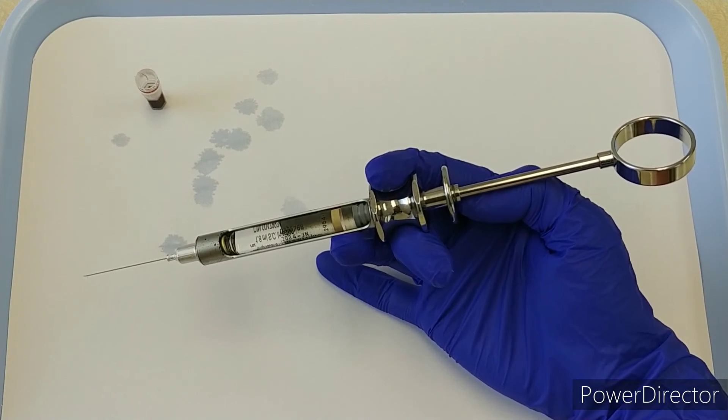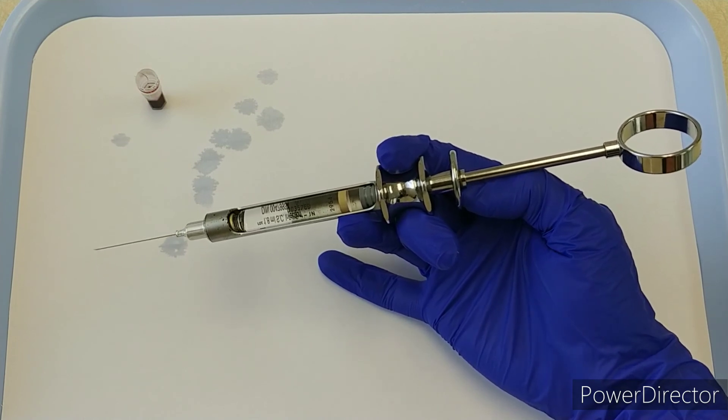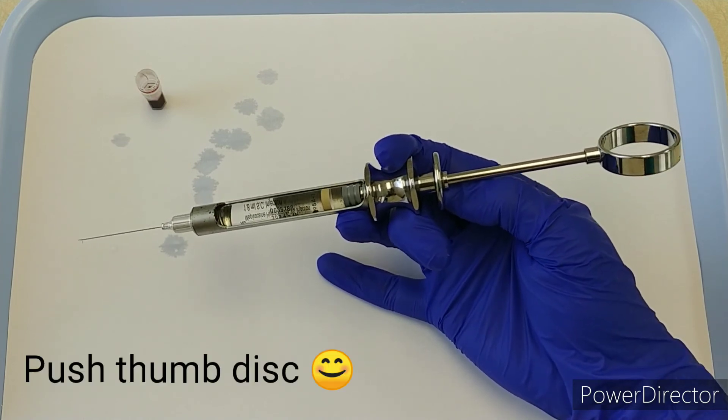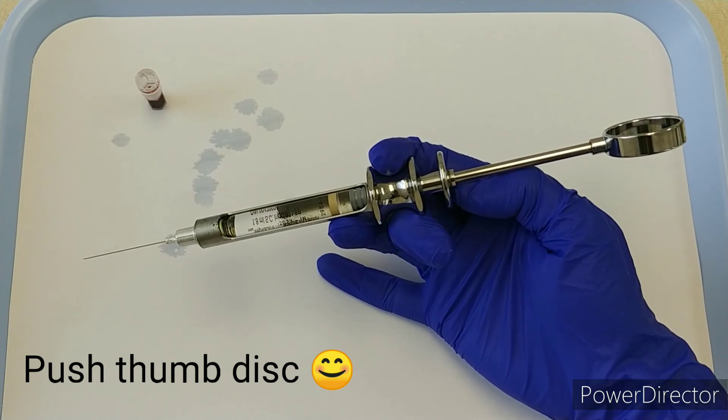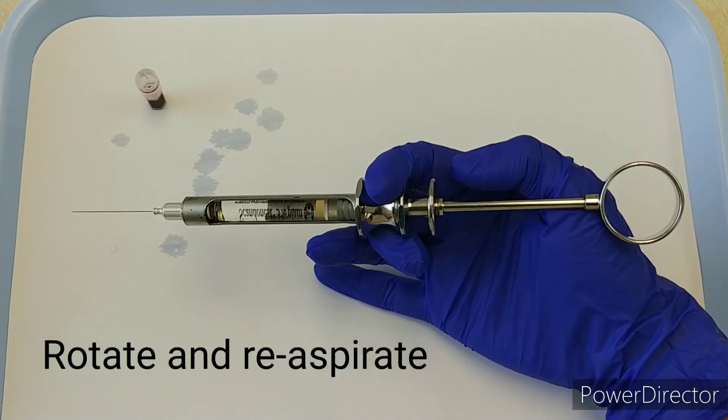To do aspirations with this self-aspirating syringe, I just have to push that thumb disc in pretty hard, and then I'll get my aspiration. Then I'm going to rotate a quarter turn and do it again. You can see the bubbles traveling up.